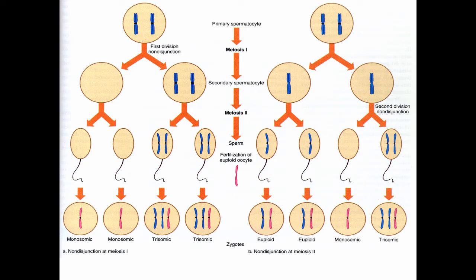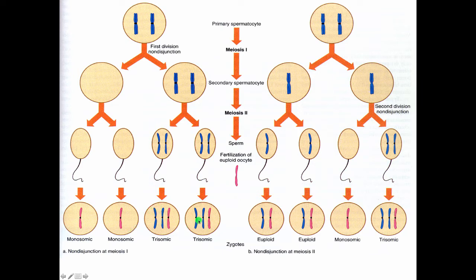How do you wind up getting aneuploid individuals? Nondisjunction can occur at meiosis 1 or at meiosis 2. The diagram on the left shows nondisjunction at meiosis 1. After the first meiotic division, you have cells with two copies of a particular chromosome and cells with no copies. If these were developing sperm, you'd get two conceptuses that are trisomic and two that are monosomic for that chromosome — all of the conceptuses would be abnormal.